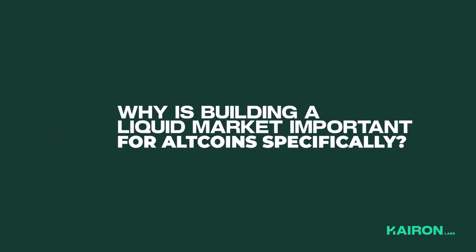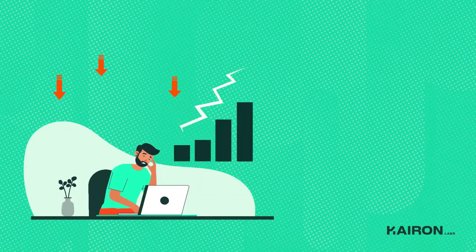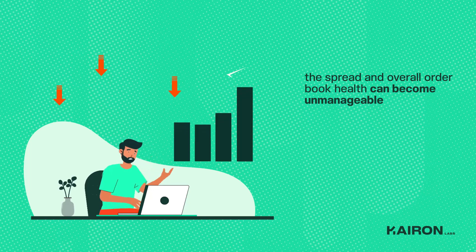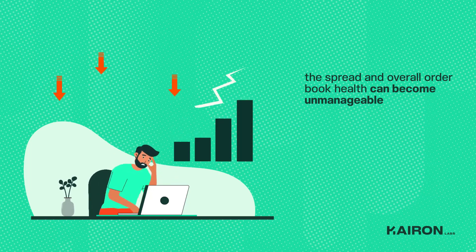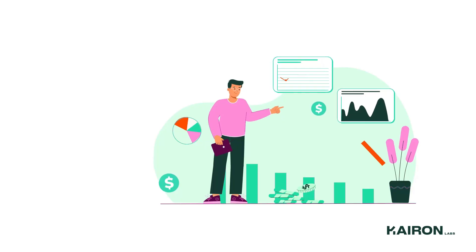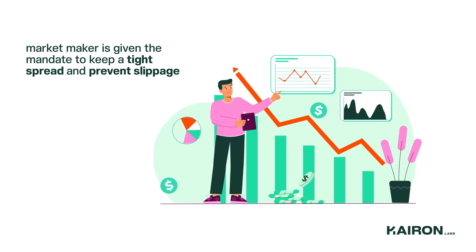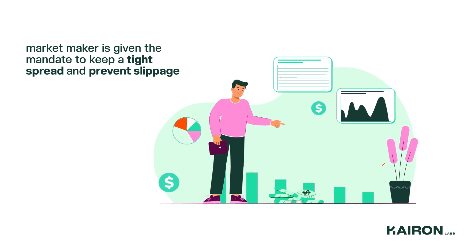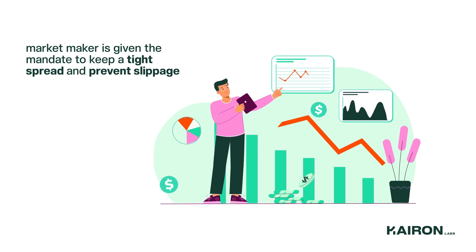Why is building a liquid market important for altcoins specifically? Without designated market makers, the spread and overall order book health of these new and often very illiquid markets can become unmanageable, which will negatively affect the demand for that particular altcoin. The market maker is given the mandate to keep a tight spread and prevent slippage, which makes the altcoin more attractive to potential traders.